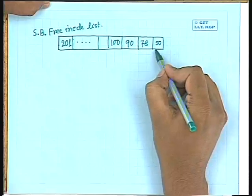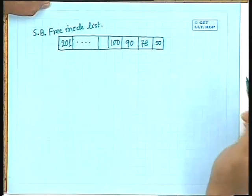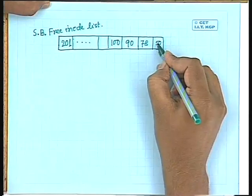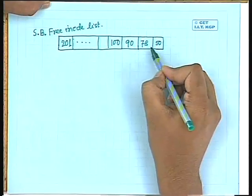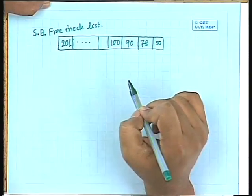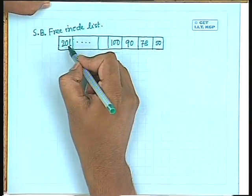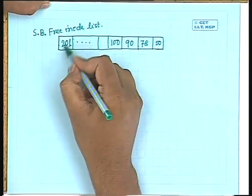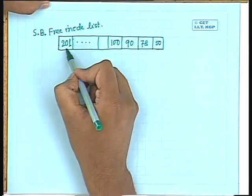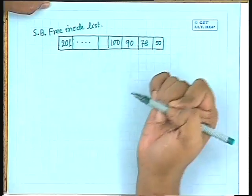Typically, inode 50 will be allocated to the newly created file or directory, and once inode 50 is allocated, that entry in the super block free inode list becomes empty. Next time another file or directory is created, inode number 78 is allocated. This way, when we have to allocate the last inode — inode number 201 — from this super block free inode list, the entire list will be empty. When we have to allocate this last inode, we have to search the file system for other inodes which are still free.